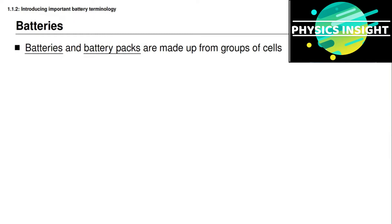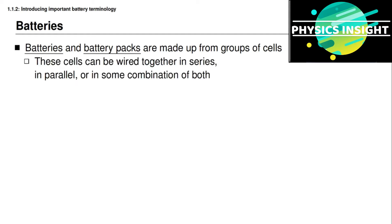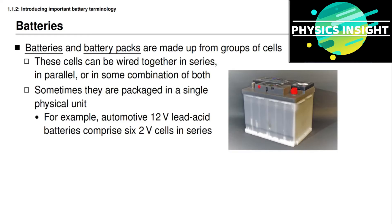If we connect individual cells together, we build what is known as a battery or a battery pack. It doesn't matter whether the cells are wired together in series or in parallel — a battery pack comprises cells wired in series, parallel, or some combination. For example, the standard automotive 12-volt lead-acid battery is built from six 2-volt lead-acid cells wired in series inside of a single package.